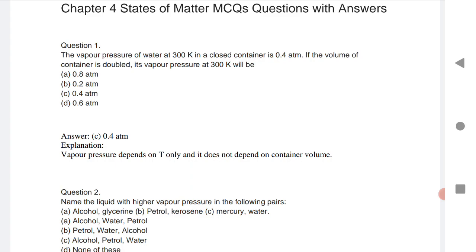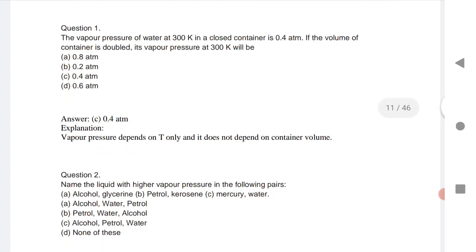So if you are increasing the volume, it doesn't affect the pressure. If temperature is changing, the pressure is also changed. So the option is same 0.4, option C. Remember, most of the time they will give you number of questions if the temperature remains same, the pressure is same.